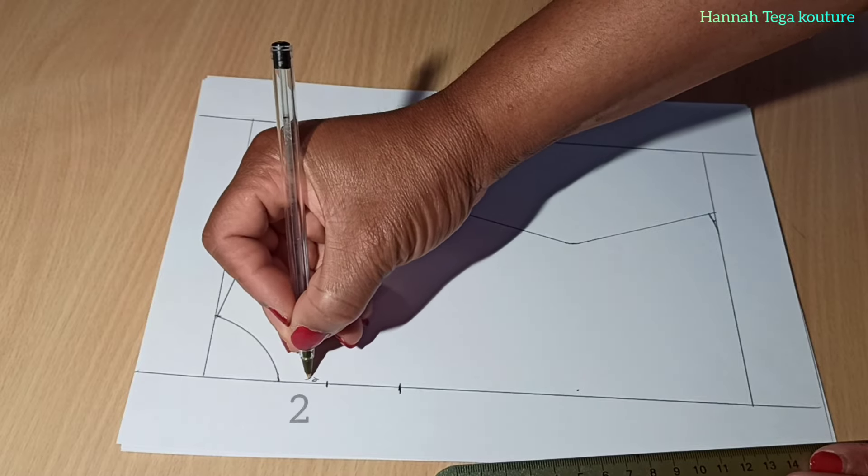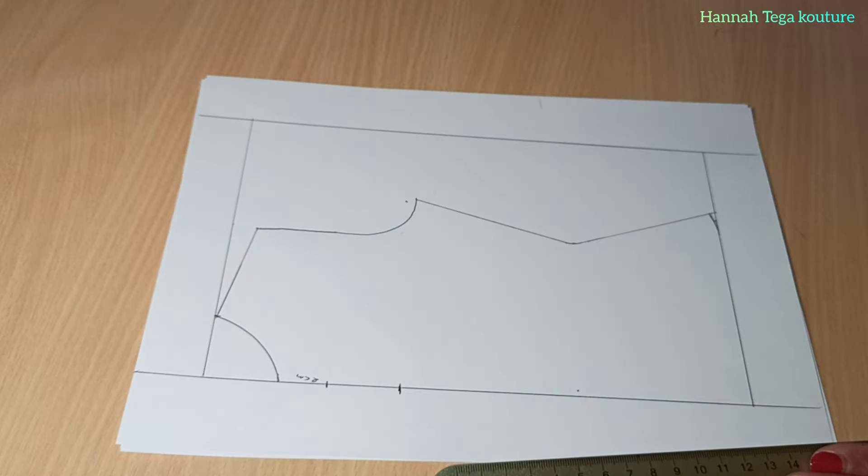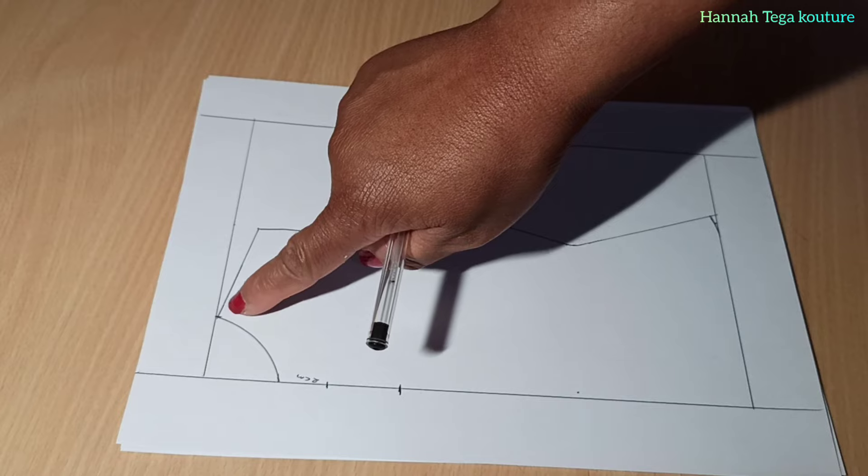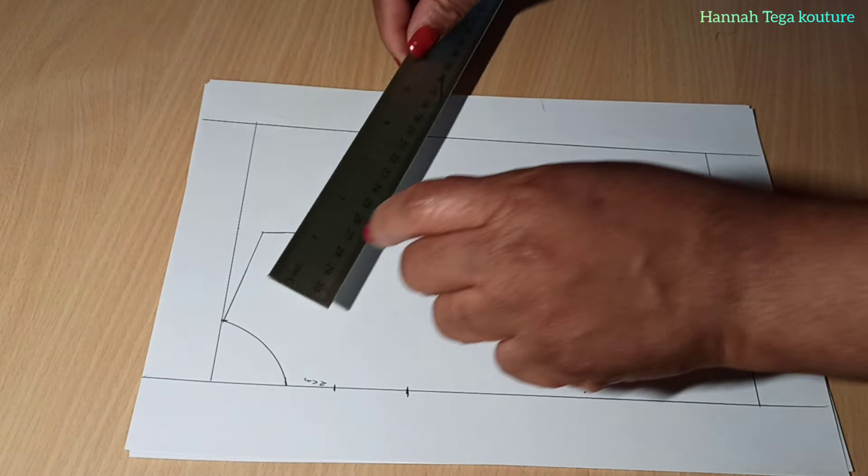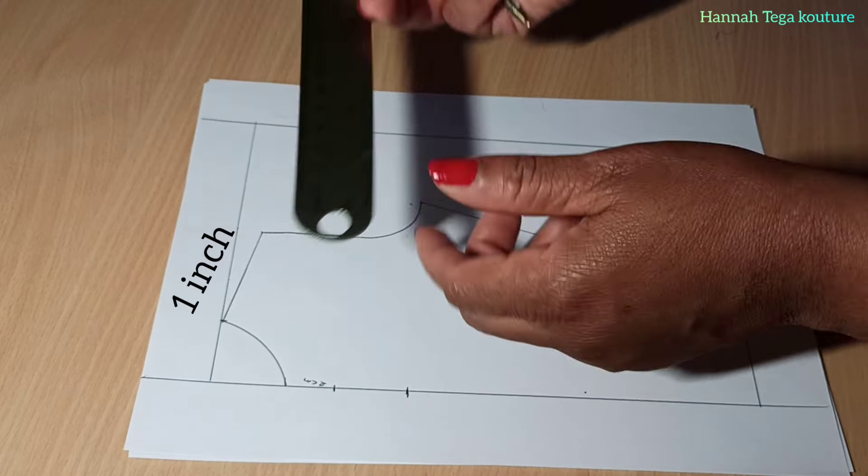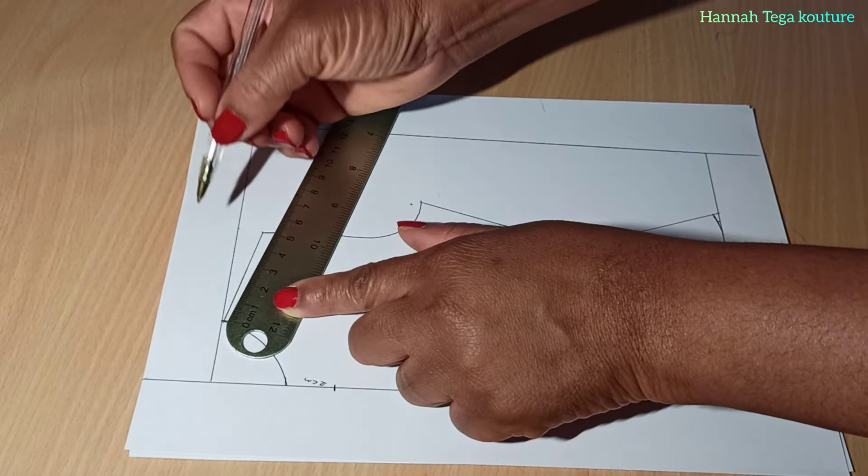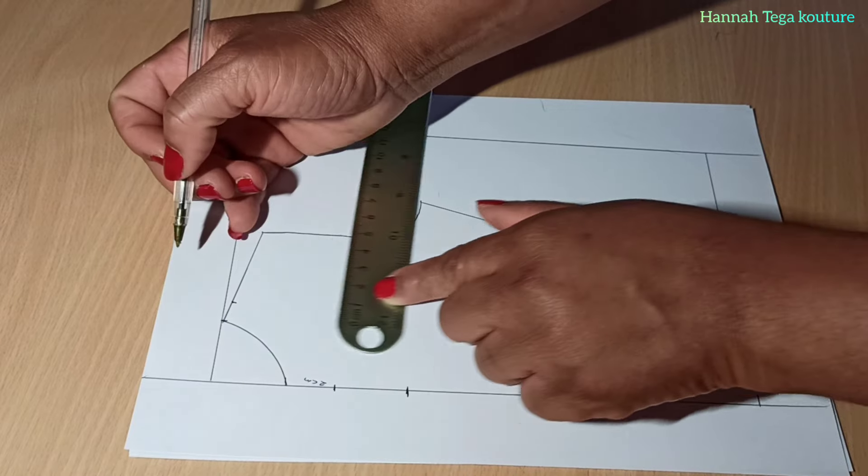So you want to go over to the shoulder and come in by one inch. Don't forget this is centimeters not inches, but in real life you want to come out by one inch and connect it to the two inches.